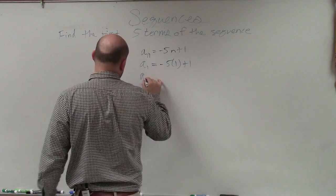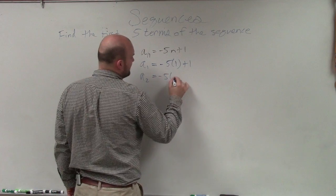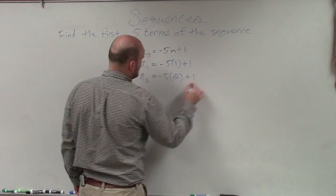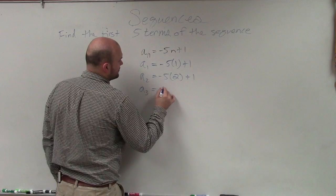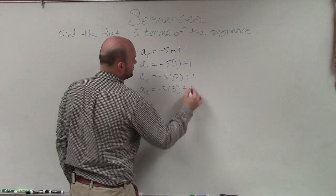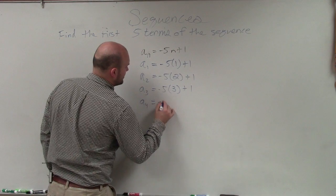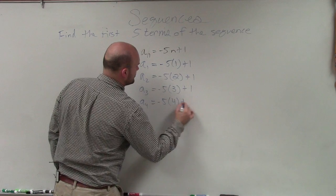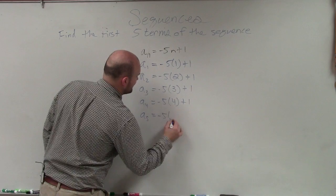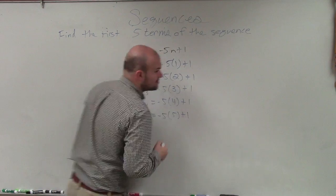And we're just going to follow that pattern. If I want to find a_2, then I do negative 5 times 2 plus 1. a_3 equals negative 5 times 3 plus 1. a_4 equals negative 5 times 4 plus 1. And a_5 equals negative 5 times 5 plus 1.